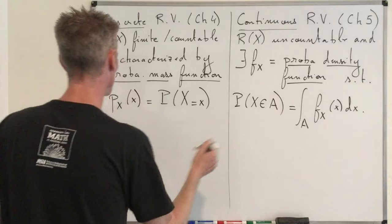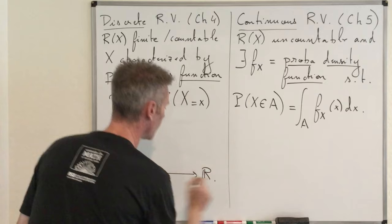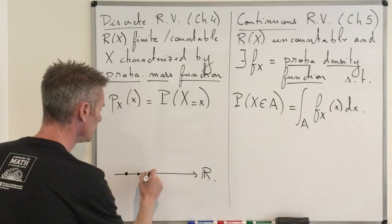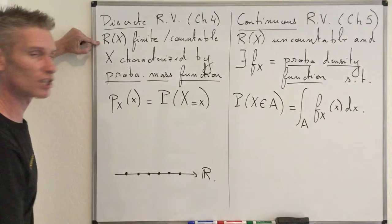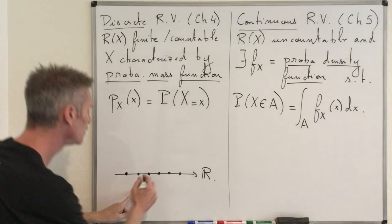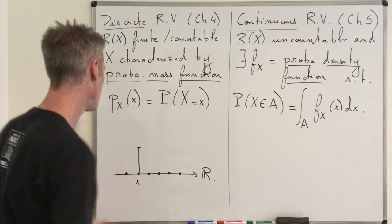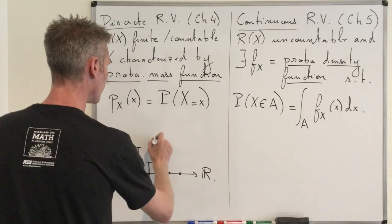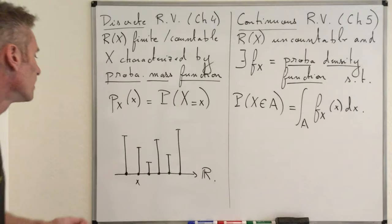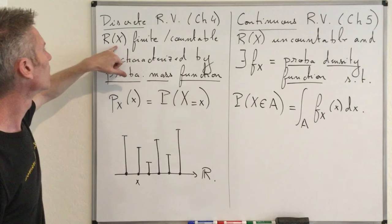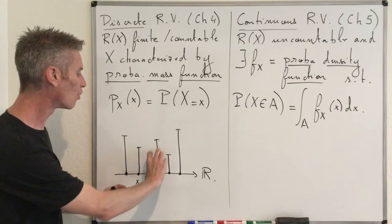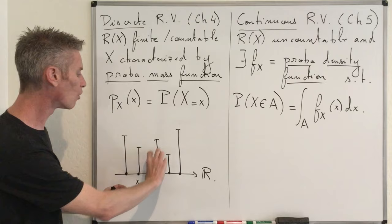Let me draw a picture to illustrate. In the discrete case, on the real line you have points representing the range of X. For each little x, you can draw a bar whose height equals P(X = x). This is what a probability mass function looks like — and because all the probabilities must add up to 1, the heights of all those bars must sum to 1.